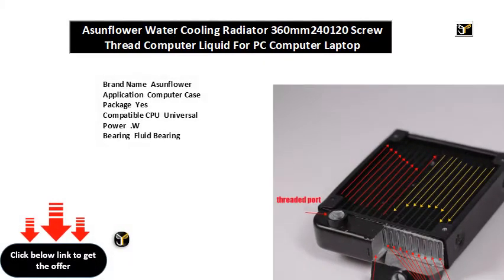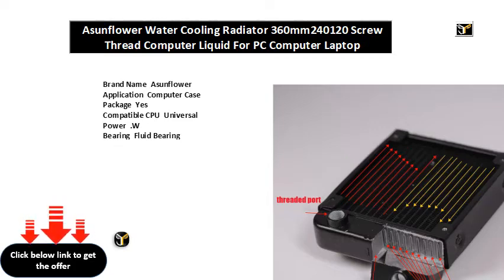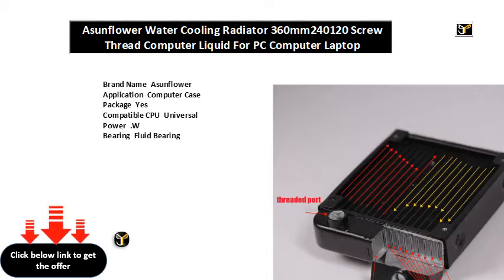Brand name AjunFlower. Application: computer case. Package: yes. Compatible CPU: universal. Power: W. Bearing: fluid bearing. Fan life: HRS. Fan speed control: no. RPM. Noise: DBA. RGB support. Air volume: CFM. Lines. Type: water cooling. Power interface: pin. Model number.